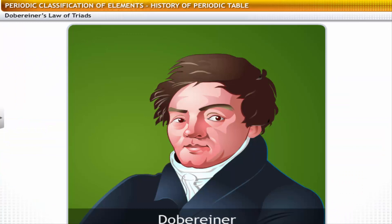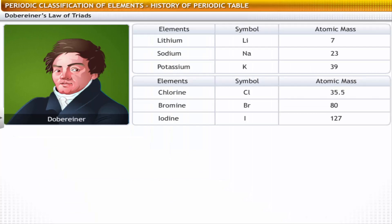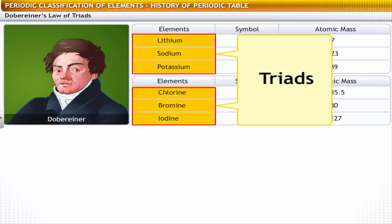After further research, a German scientist, Dobereiner, arrived at a hypothesis in the year 1829. According to Dobereiner, all elements occurred in groups of three when arranged in increasing order of atomic masses. He referred to these groups as triads.